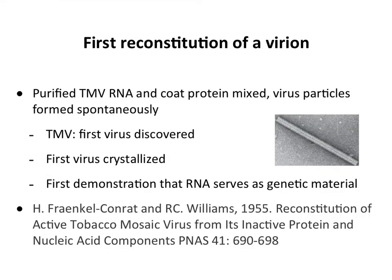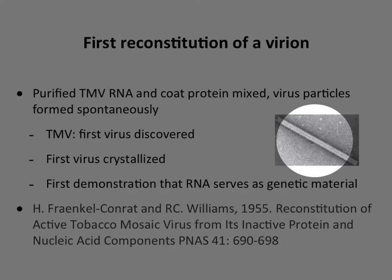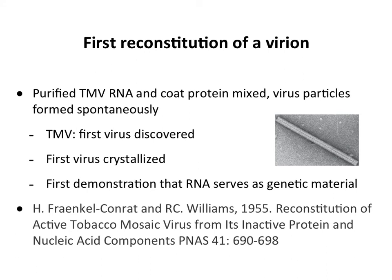The first reconstitution of a virus particle from its components was done with tobacco mosaic virus — a virus of many firsts, as it was also the first virus to be discovered. In 1955, investigators purified the RNA and the coat protein. This virion is a single rod-shaped structure made up of a single coat protein repeated many times, with all those coat proteins engaging in very similar interactions. They mixed the RNA and the coat protein, and they spontaneously assembled to form the virion — and showed that the assembled virus was infectious. This was really the beginning of our understanding that virus components self-assemble: you can take them apart and put them back together. This was also the first time RNA was shown to be genetic material.